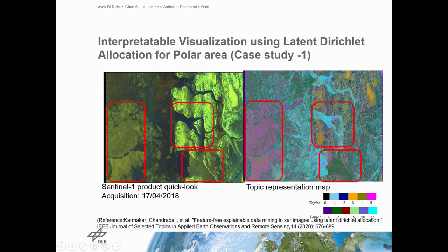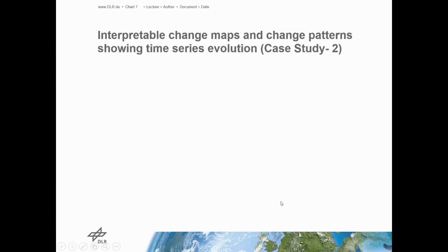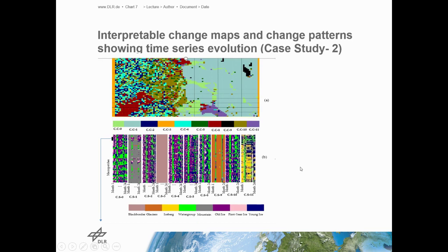This is from my publication in explainable machine learning. From the second case study, we produce an interpretable change map and the change pattern that shows how the study area has evolved using time series satellite images.